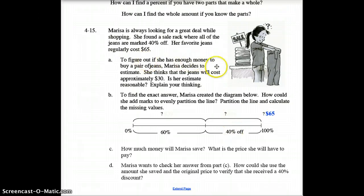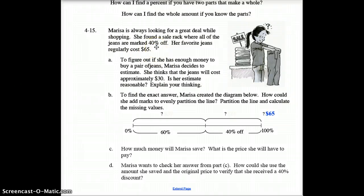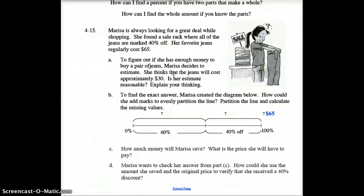To figure out if she has enough money to buy a pair of jeans, Marissa decides to estimate. She thinks that the jeans will cost about $30. Is her estimate reasonable? Well, let's see here. Compare $30 to $65. $30 is less than half of that. And if she's only getting 40% off, she's going to end up paying 60%. So is that reasonable? No, of course not. She should be thinking more like if she had said $35 or $40, maybe that's reasonable. But $30, she's going to come up short.